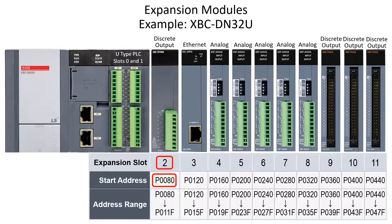The first discrete address is P word 8 bit 0, and the range is P 8 bit 0 through P 11 bit F. The last character in the P address is the bit in hexadecimal format.